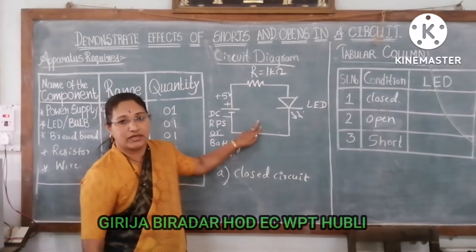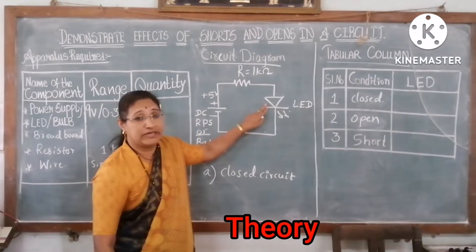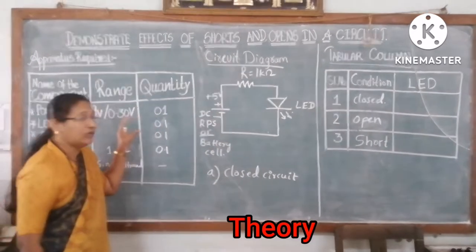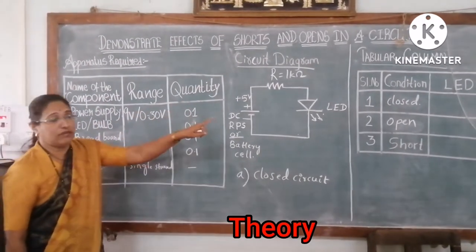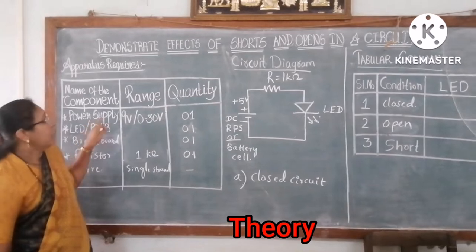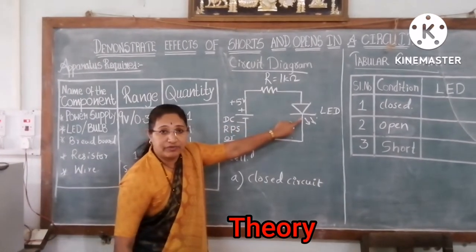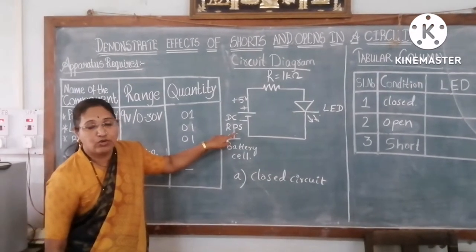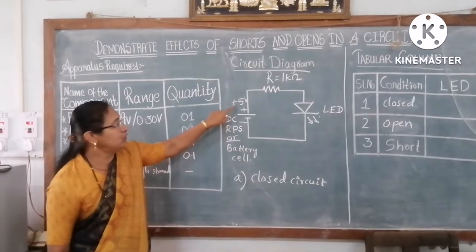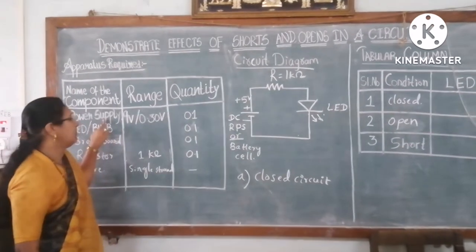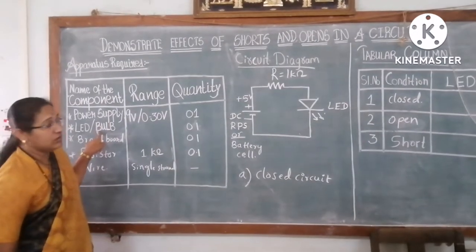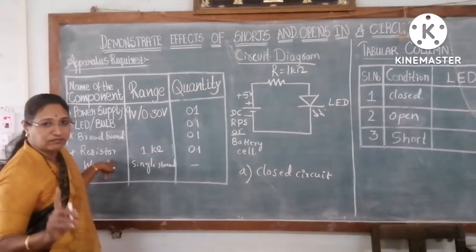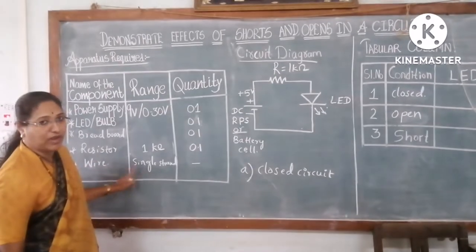This is one simple circuit consisting of a resistor, LED, and power supply. This is a closed circuit. For this experiment, we require this apparatus. We require a power supply — as we are using LED here, we need only plus 5 volts. You can use a DC power supply, but keep it at 5 volts. We also need an LED, breadboard, a 1K or 10K resistor, and single strand wire.